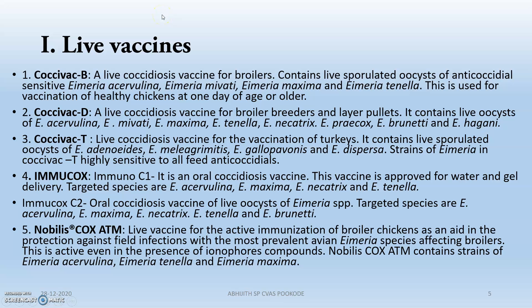The first one is the live vaccine. In this category, there are mainly five vaccinations. The first is CoxyVac-B — a live coccidiosis vaccine for broiler chickens. It contains live sporulated oocysts of Eimeria acervulina, Eimeria mivati, Eimeria maxima, and Eimeria tenella. This vaccination is used in one-day-old or eight-day-old or older chicks.